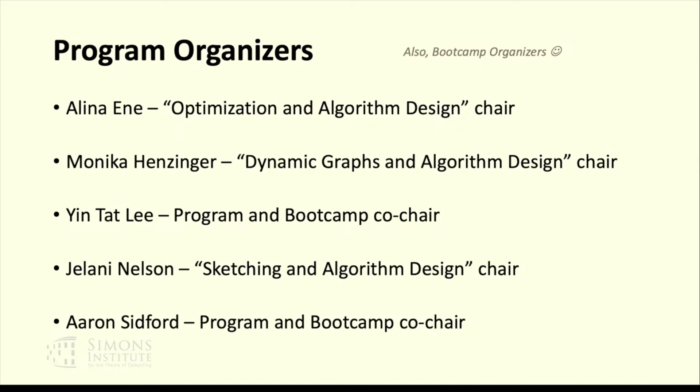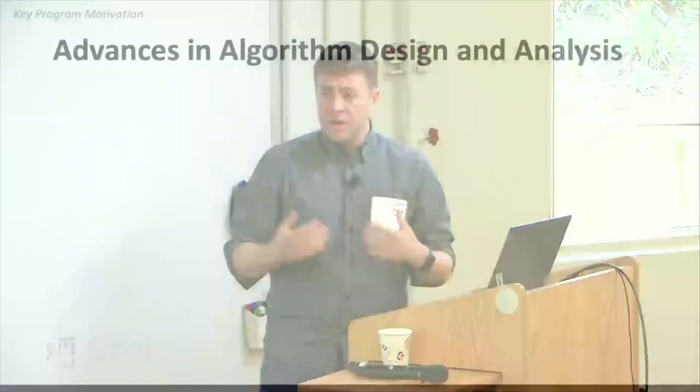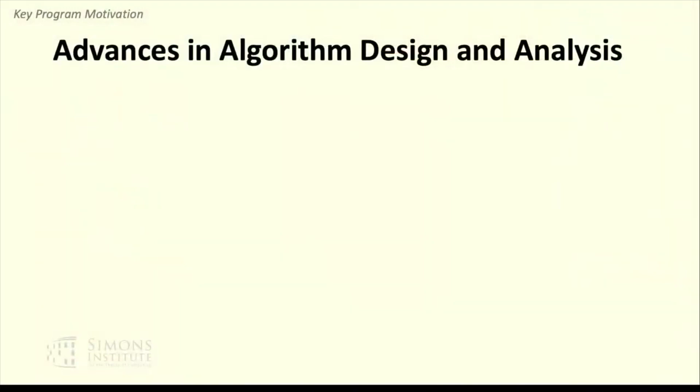In the few minutes I have, I'll give you a very brief sense of what this program is on — data structures and optimization for fast algorithms. There are a number of different things motivating this program happening this quarter. One of the key motivations is a number of advances that have happened in the last few years in algorithm design.